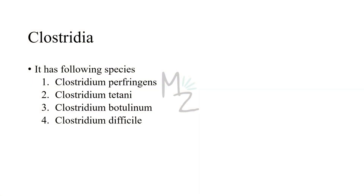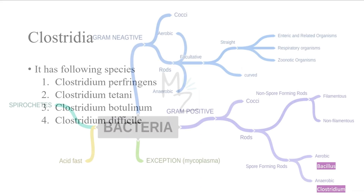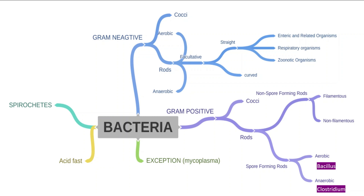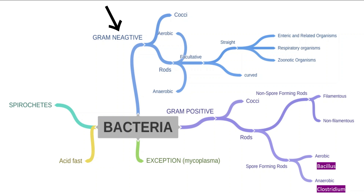The genus Clostridia has four major species: Clostridium perfringens, Clostridium tetani, Clostridium botulinum, and Clostridium difficile. Before going into the detail of C. botulinum, we should know about bacterial classification. Bacteria are classified into spirochetes, by acid-fast stain into acid-fast bacteria, and there is also the exception of Mycoplasma. On the basis of gram staining, bacteria are classified into gram-negative and gram-positive. Since C. botulinum is gram-positive, we focus on that group. A link to a detailed classification video is in the description.